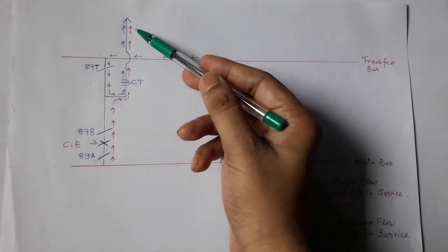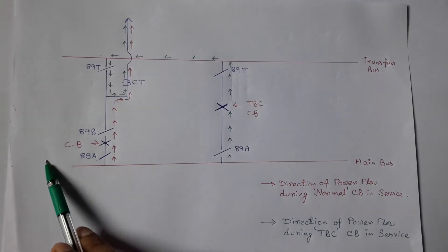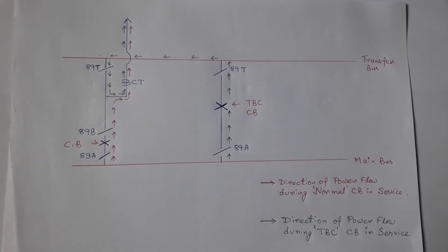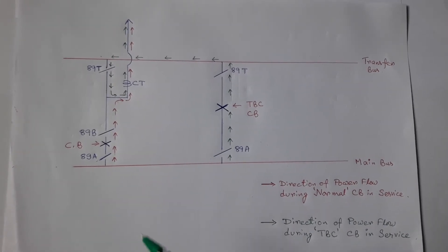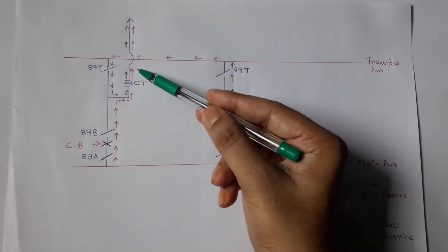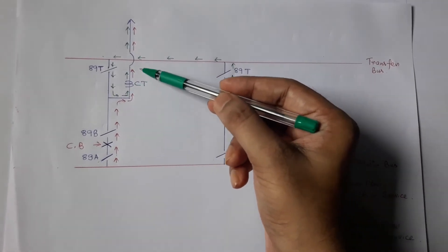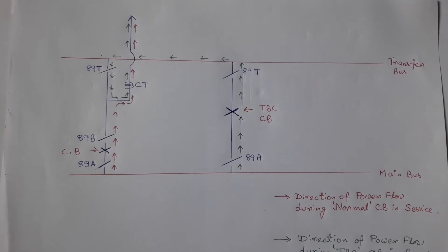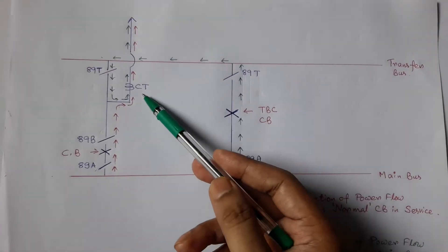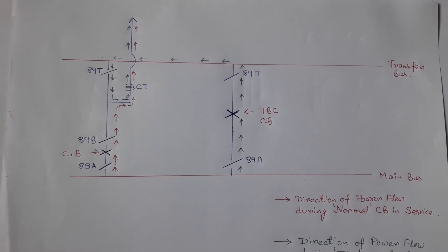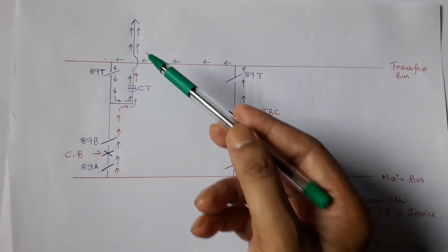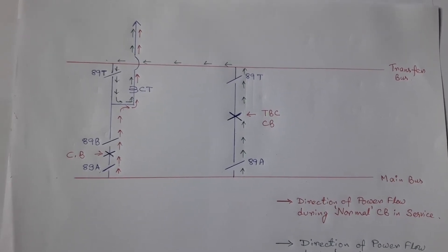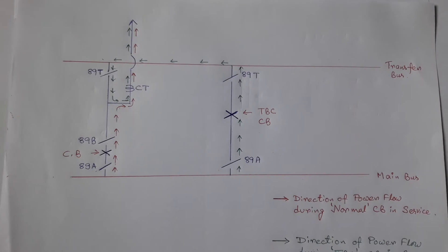But if any defect occurs in the normal circuit breaker, then the load of this feeder is diverted to the TBC circuit breaker, and the direction of power flow is shown in green. So to feed power to this feeder, we can use the normal circuit breaker or the TBC circuit breaker. Notice that for both cases, current is flowing through the same CT, and this type of CT is called a line side CT. For both cases shown in red and green, this line side CT will be responsible for detecting any fault in the line and will provide tripping to either the normal circuit breaker or the TBC circuit breaker.